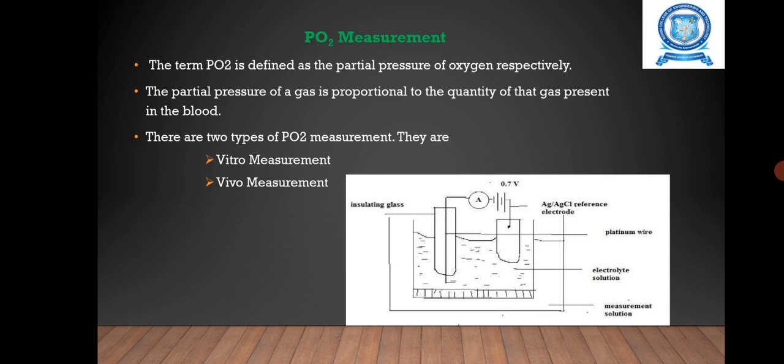Next one is PO2 measurement. The term PO2 is defined as the partial pressure of oxygen. The partial pressure of a gas is proportional to the quantity of that gas present in the blood. There are two types of PO2 measurement: vitro measurement and vivo measurement. The partial pressure of oxygen in the blood is measured directly by electrode.